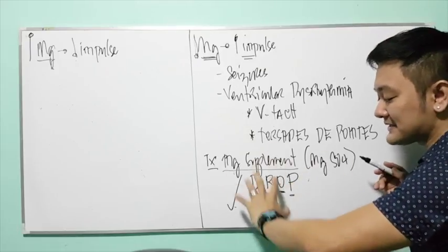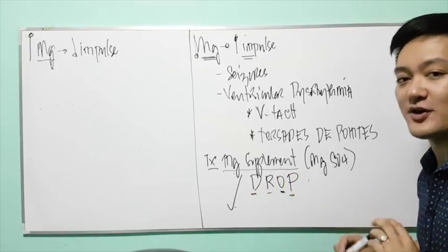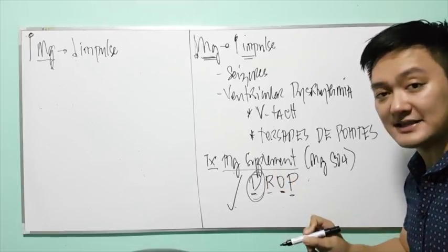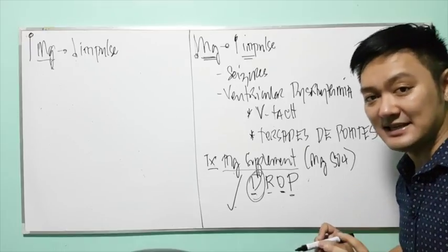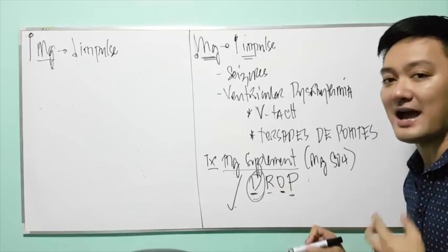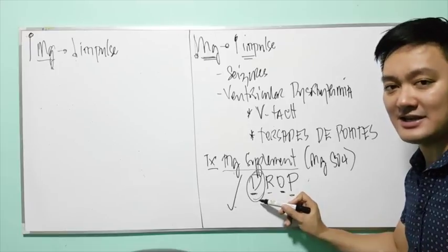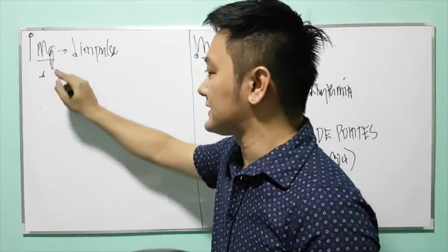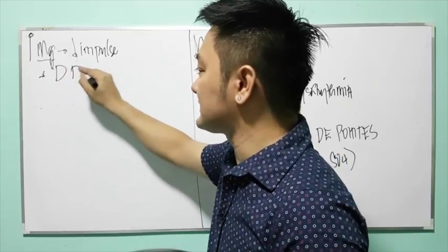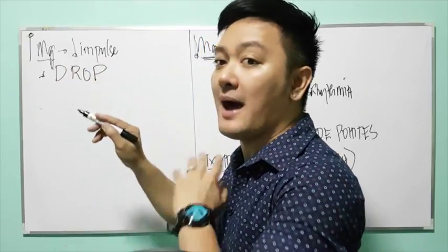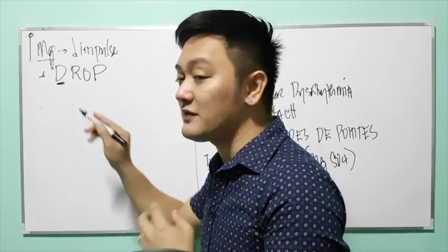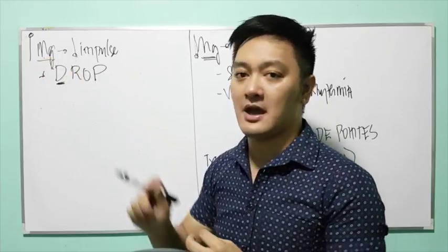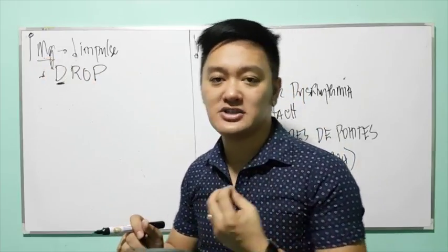Among the DROP presentations, the earliest sign of magnesium toxicity is a diminished or absent deep tendon reflex. So take note: diminished or absent deep tendon reflex is an early indication of magnesium toxicity, and among DROP, it is the earliest presentation.